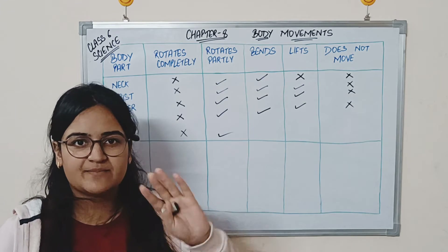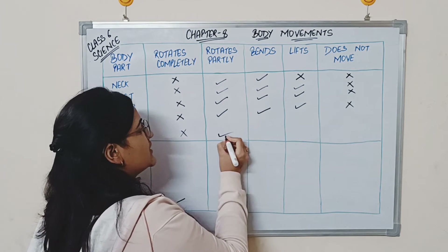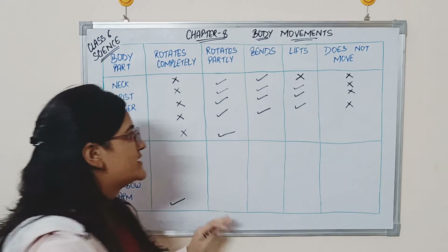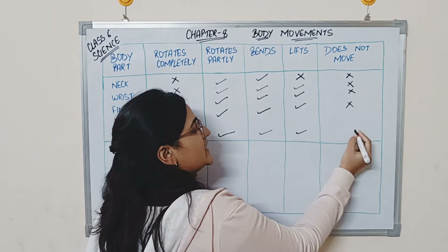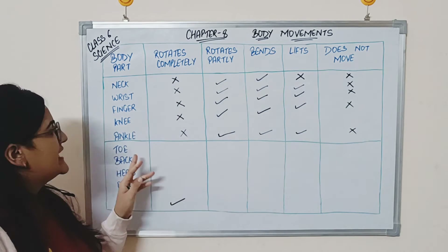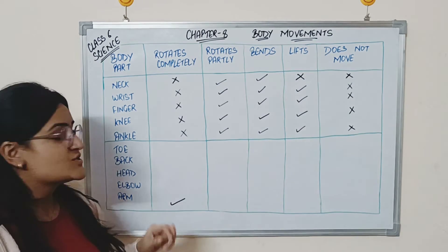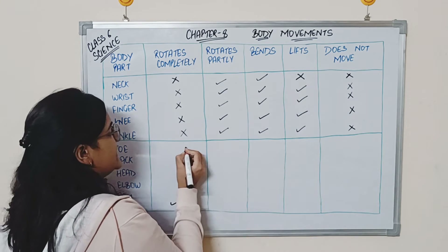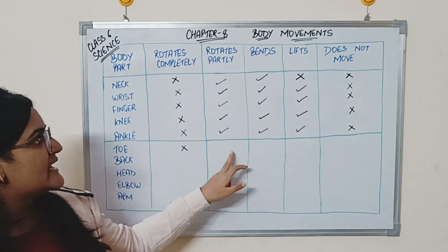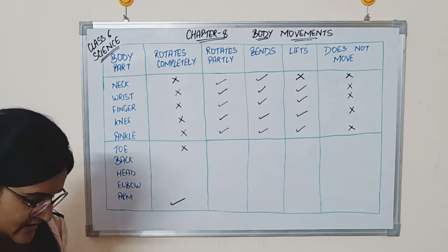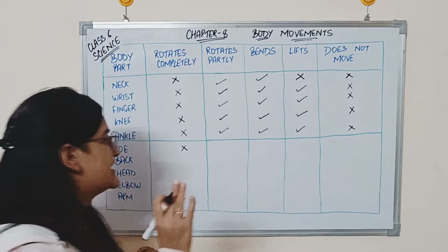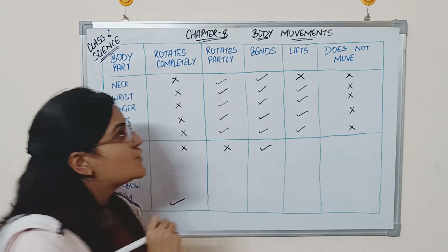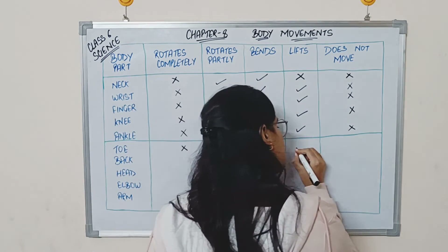You can lift your feet obviously. Next is the toe. Your toe cannot rotate completely. It can rotate partly, just like the finger. It can bend — you can bend your toes. You can also lift your toes.